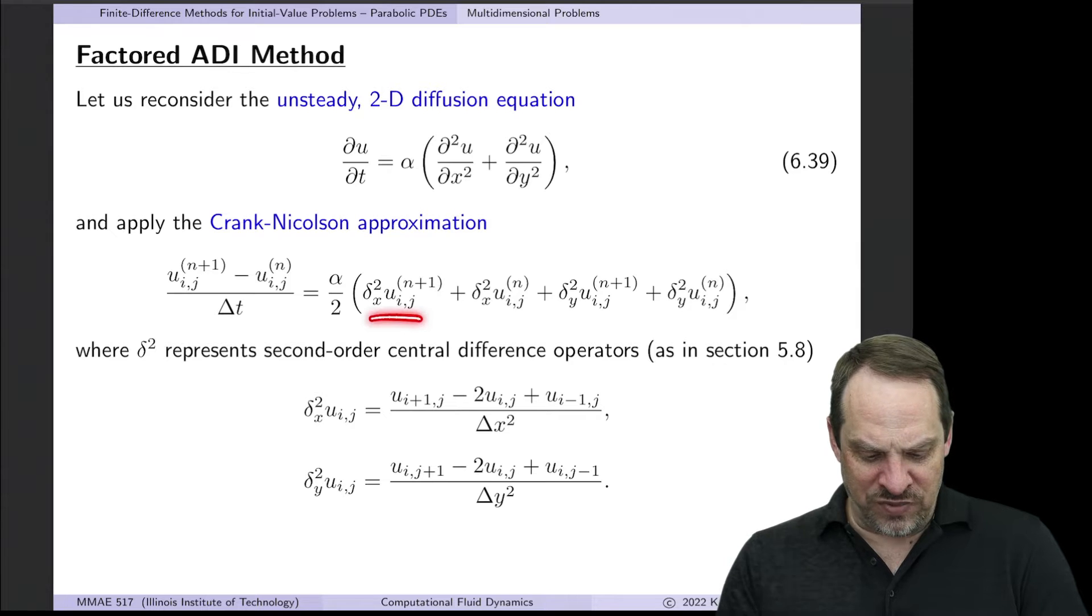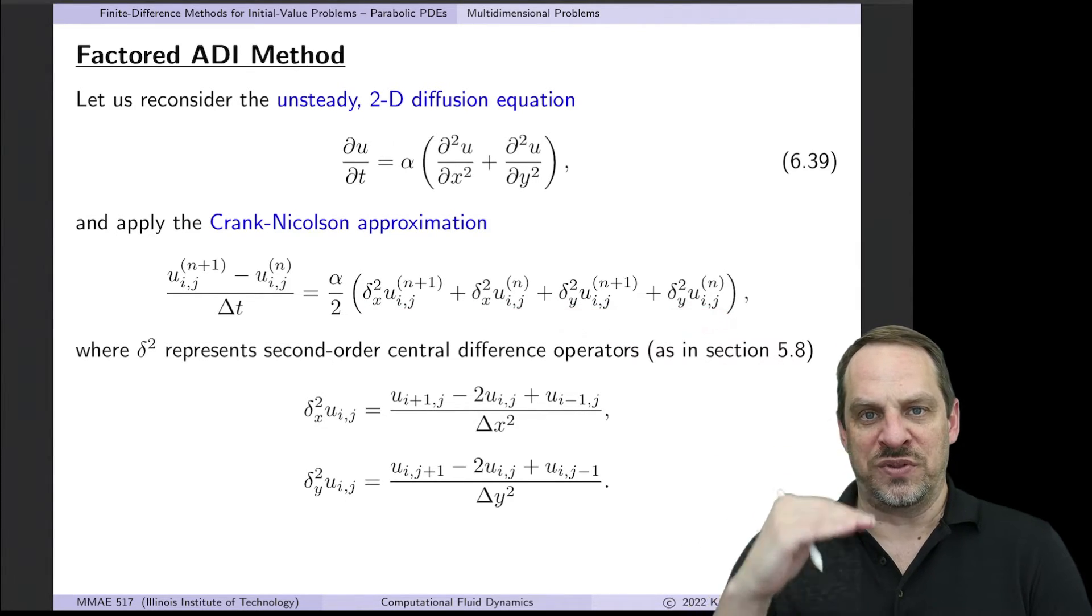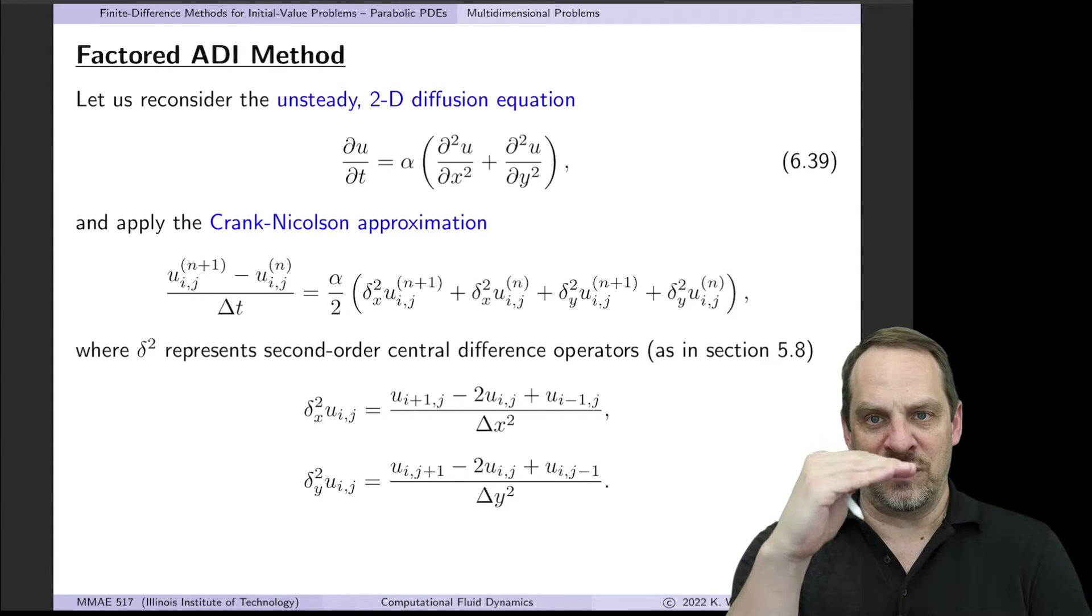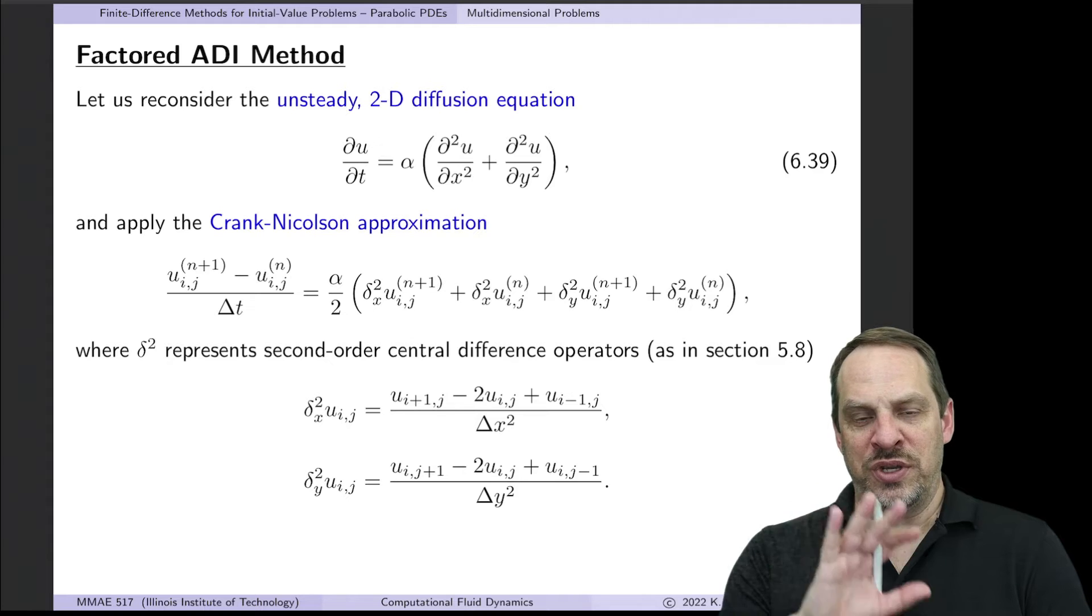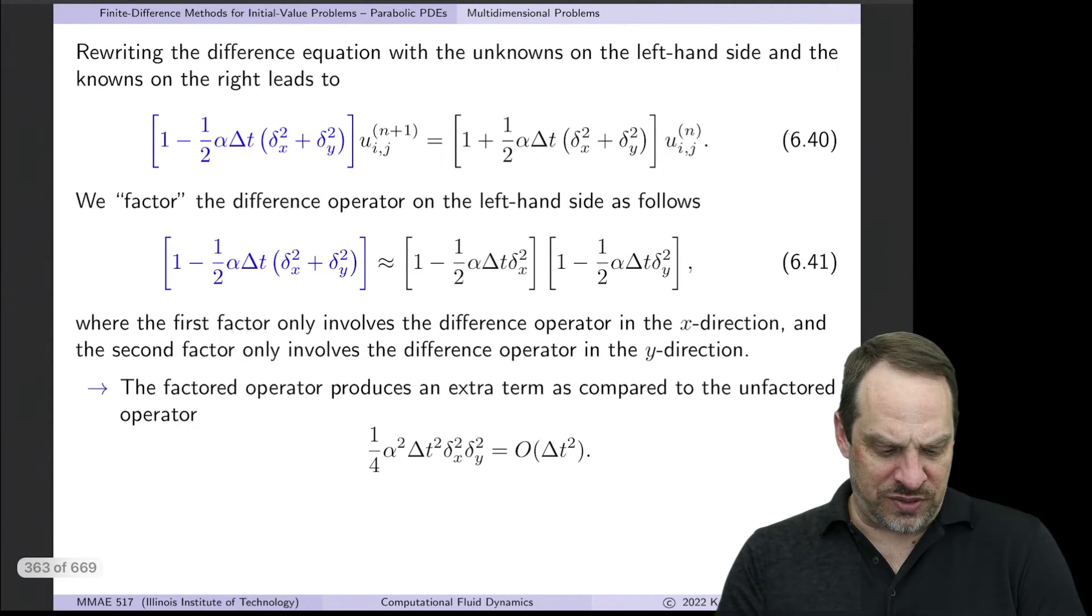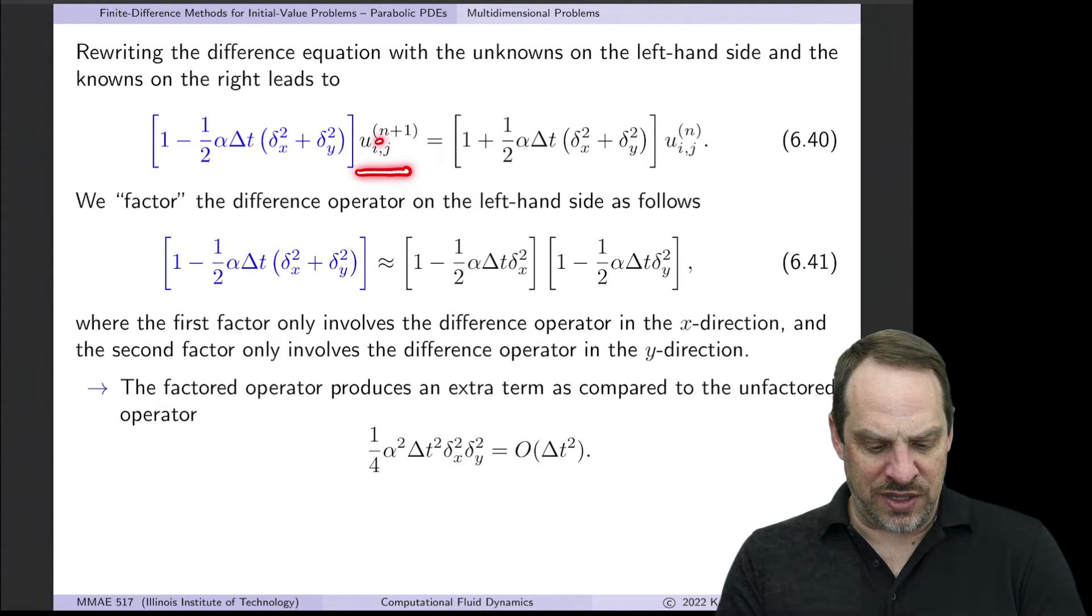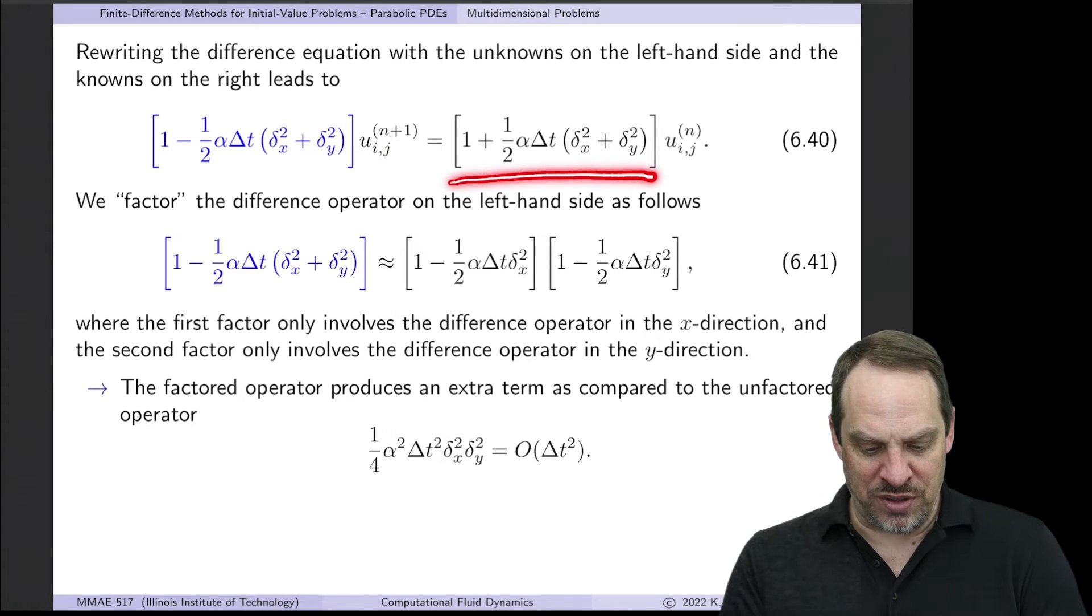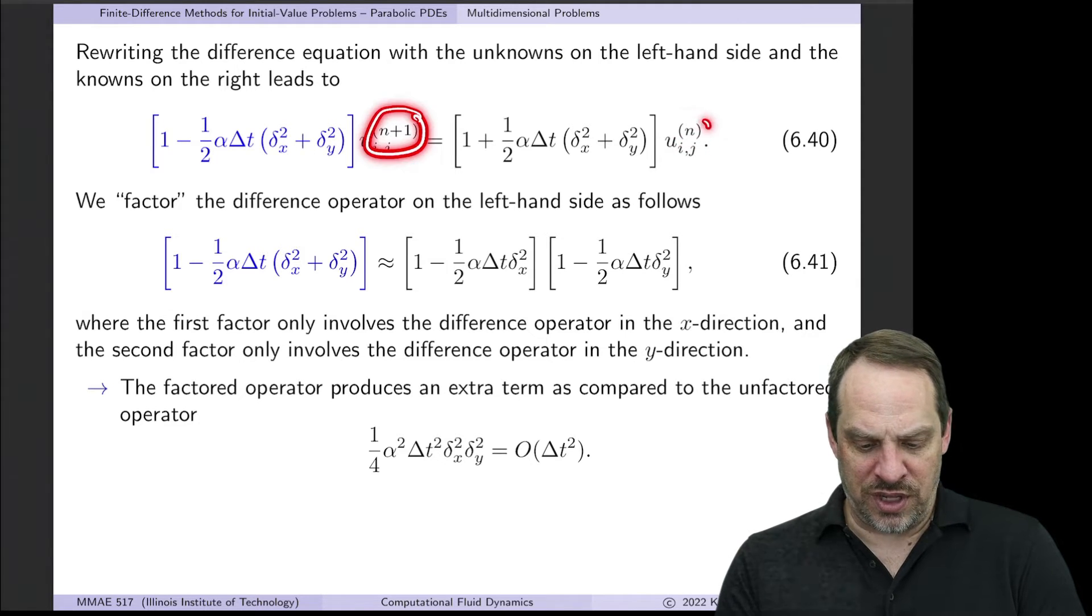Remember we're averaging both derivatives across the n and n plus first time level to get their derivatives at the intermediate time level. So again, as always, we pull the unknowns to the left and the knowns to the right. So in this operator notation, we have this in blue operating on the u_ij at the n plus first time level, and that's equal to this operator operating on the u_ij at the previous nth time level. Again, unknown and known.